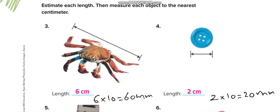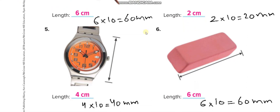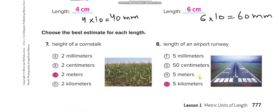For independent practice, solve all these questions yourself and then check your answers with this video. Also try converting to millimeters for extra practice. For the cornstalk, the best estimate is about two meters since no other option fits. A runway is large — about five kilometers.